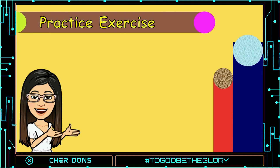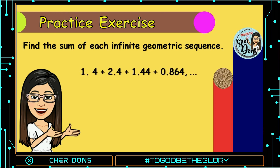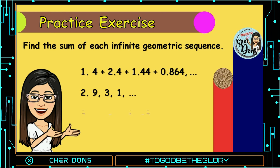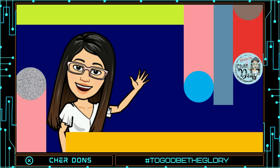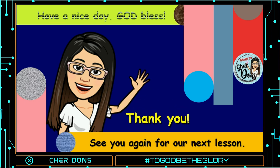Okay, now it's your time to practice. Find the sum of each infinite geometric sequence. Number 1: 4 plus 2.4 plus 1.44 plus 0.864, and so on. Number 2: 9, 3, 1, and so on. Number 3: 1/9, negative 1/3, 1, negative 3, and so on. Don't forget to comment down your answer so we can check it. Good luck! I hope you enjoyed our discussion for today. See you again for our next lesson. Thank you, have a nice day, and God bless everyone! Bye!